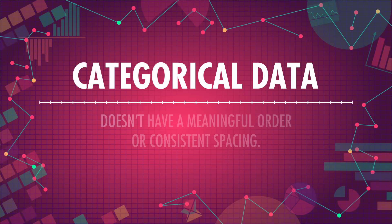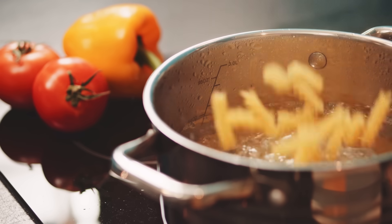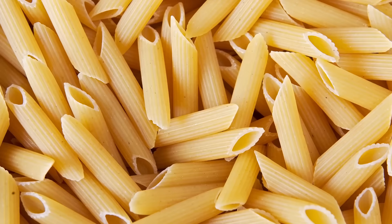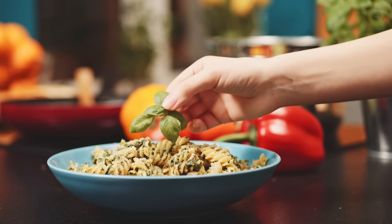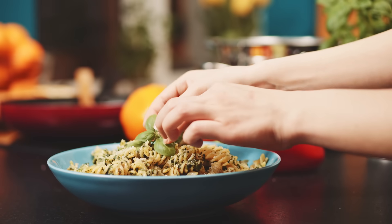Categorical data doesn't have a meaningful order or consistent spacing. For example, favorite kind of pasta. You might like penne, rotini, linguine, even angel hair. But there's no objective way to put those pastas into a meaningful order. Is penne truly better than linguine? Where does rotini fit in? It would be pasta madness to try to put them in order.